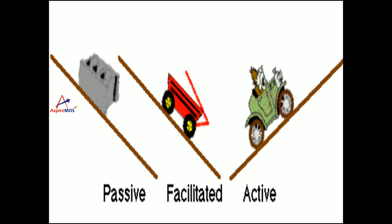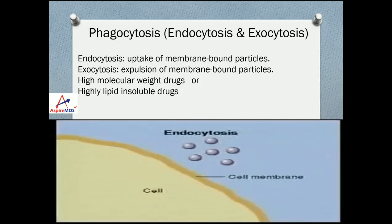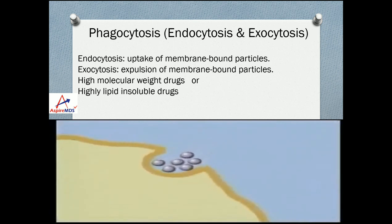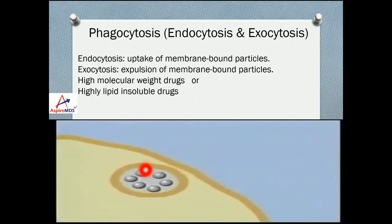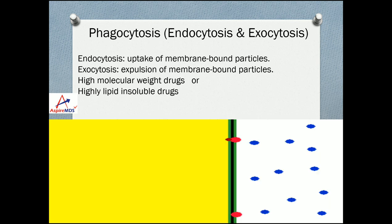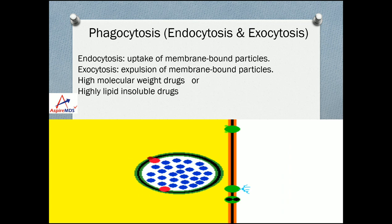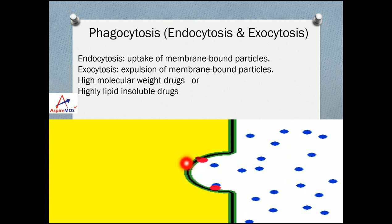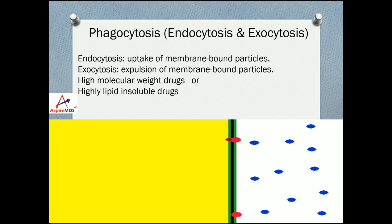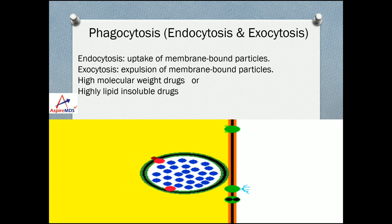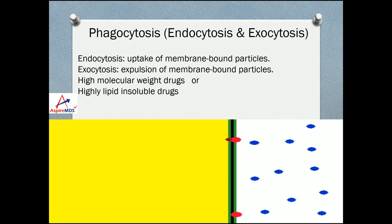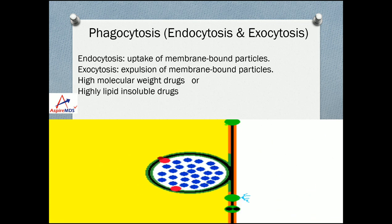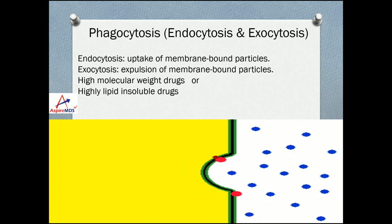Another mode is phagocytosis. Endocytosis is the uptake of molecules from outside through membrane-bound particles, whereas exocytosis is the expulsion of membrane-bound particles to the periphery. Drugs that are high molecular weight or highly lipid-insoluble undergo endocytosis or exocytosis through this mechanism.